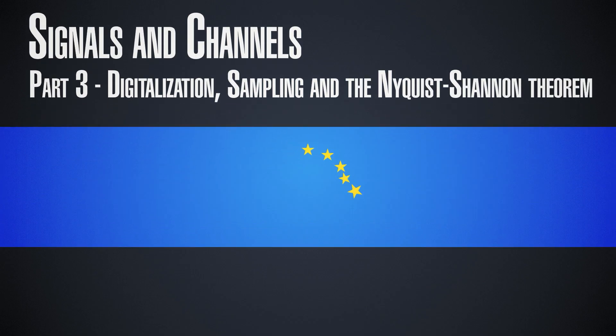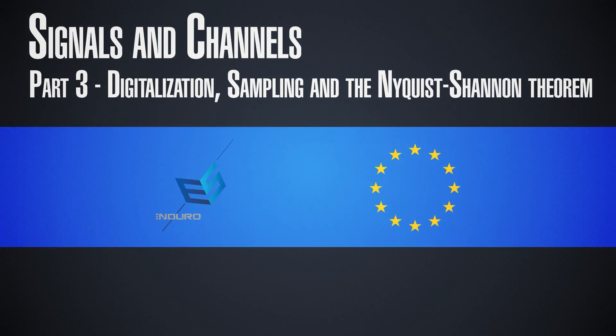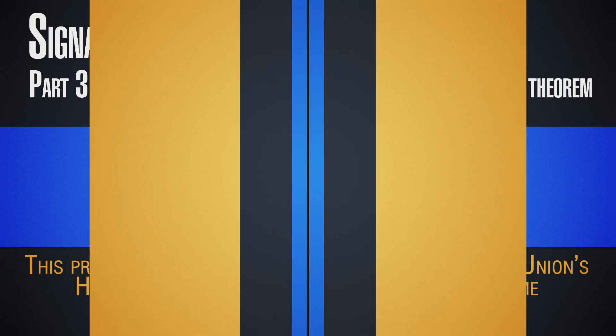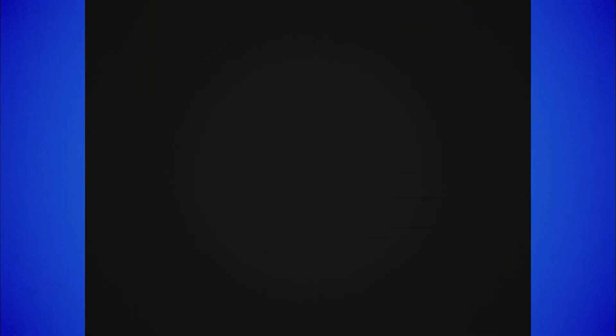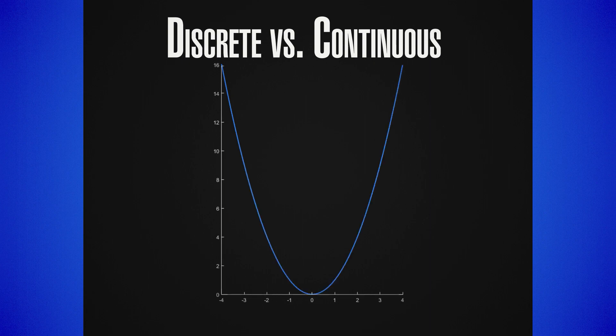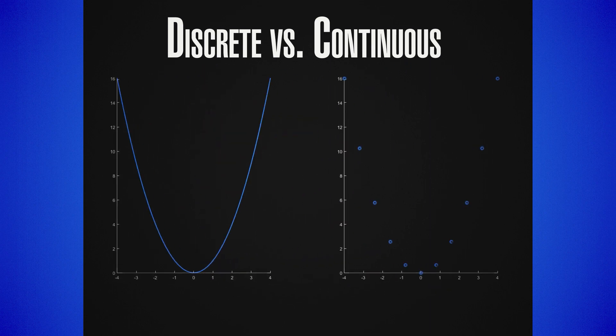A very important distinction which we made in the beginning was between discrete and continuous signals. A continuous signal — the example is this parabola shown on the slide — is essentially represented by not just infinitely many components, but they're infinitely closely spaced.